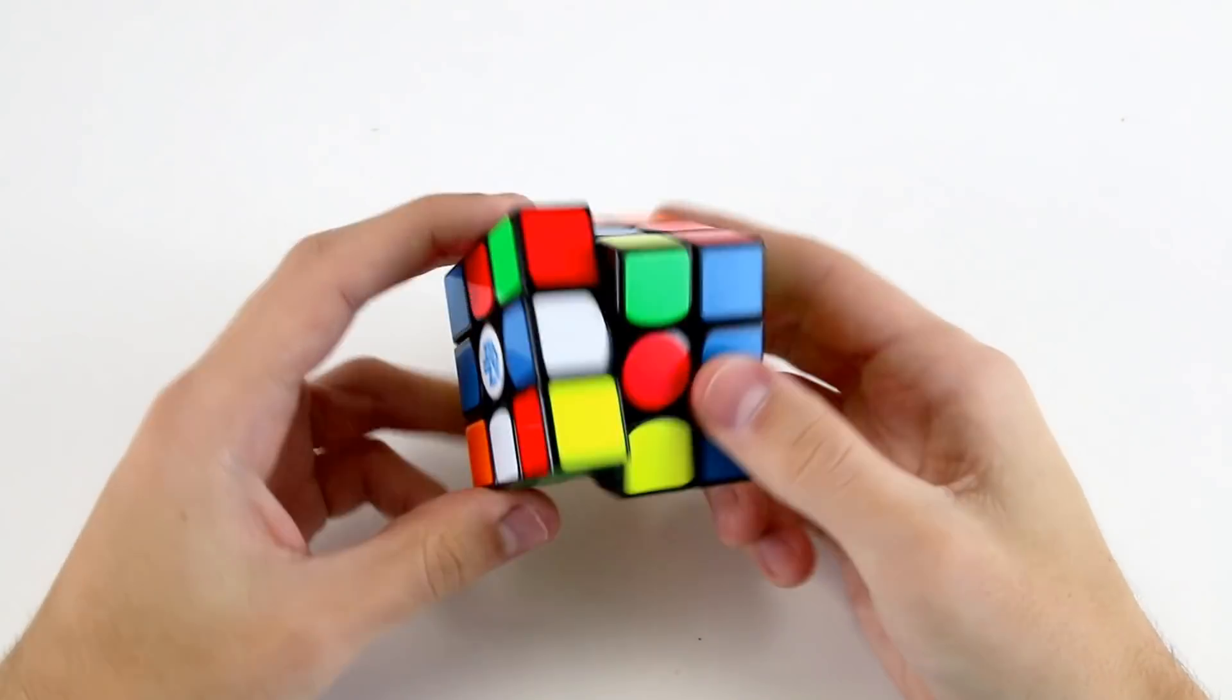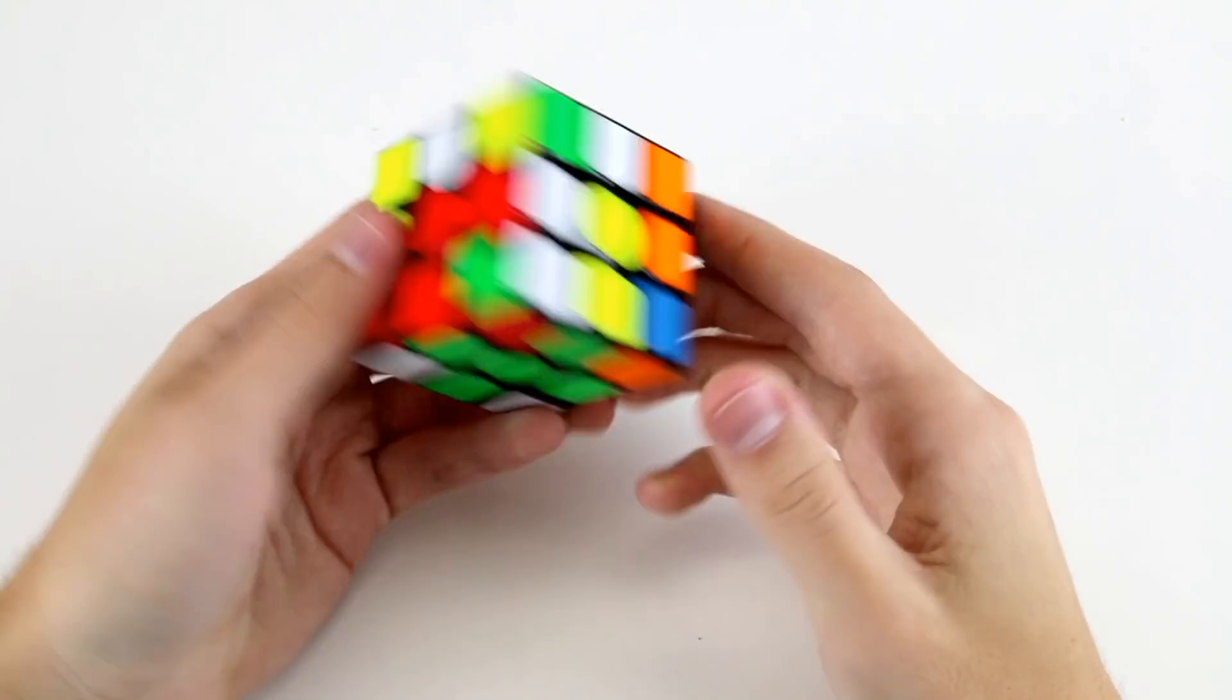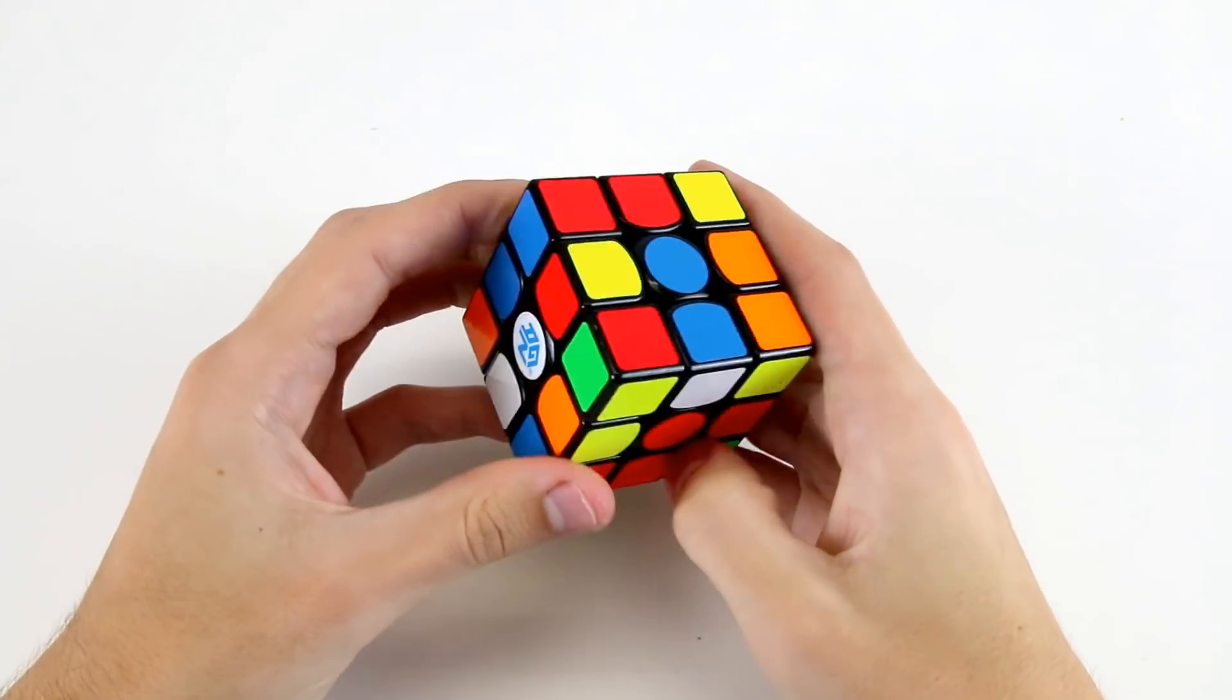So I can do something like D prime L and then with these two I can go R prime F R prime like that. So that would have been pretty easy and pretty quick to execute in a solve.